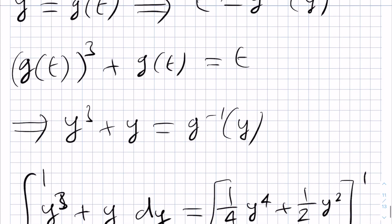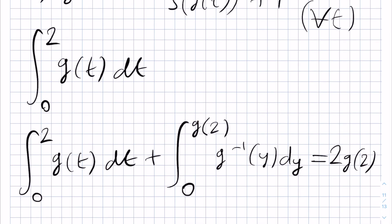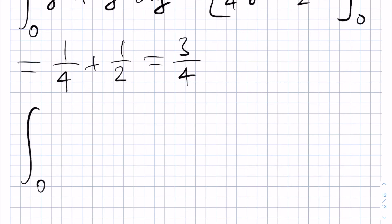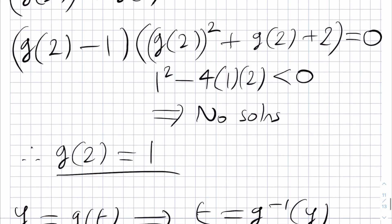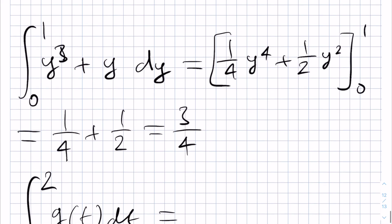So now we've calculated this integral here and we know this here because g(2) is 1. And so therefore, by rearranging, we can get the integral from 0 up to 2 of g(t) is equal to, let's have a look,